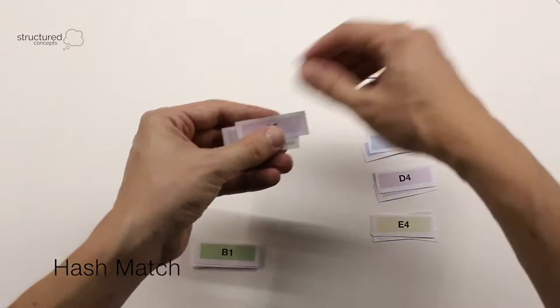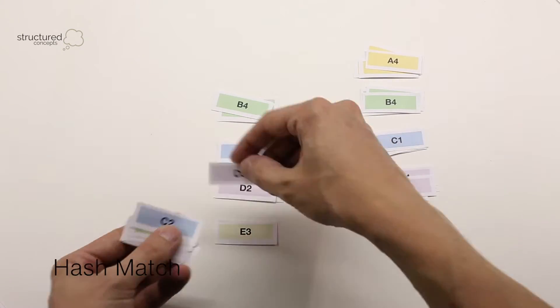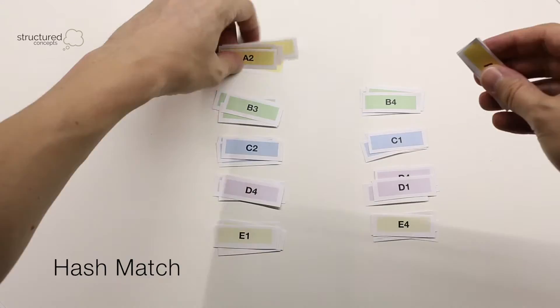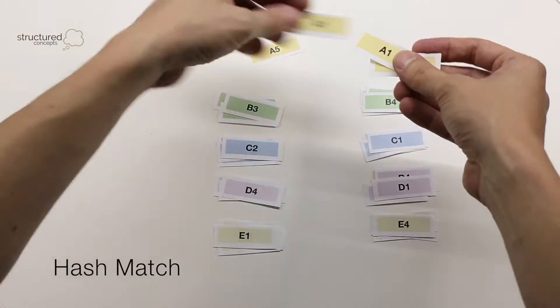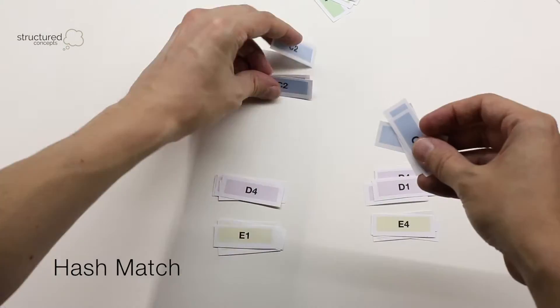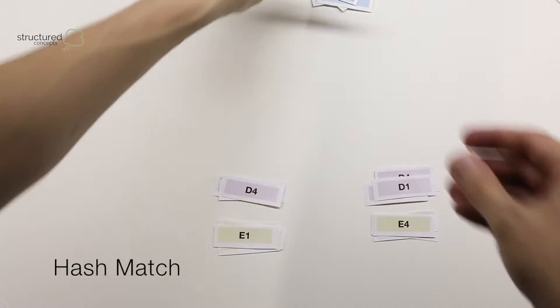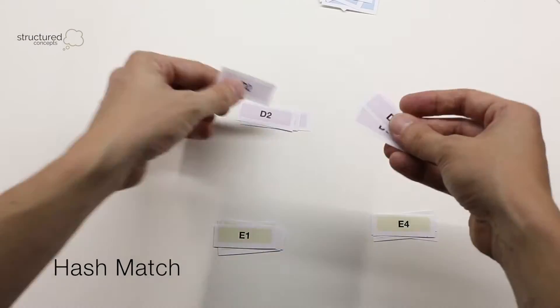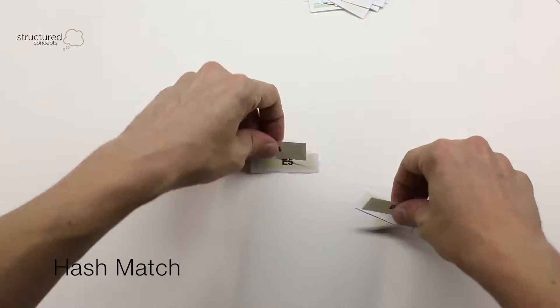First off, the general list. The hash match operator usually gets to do the heavy lifting. It splits the data into hash buckets so it can join the contents of each bucket one at a time. This process uses up memory and/or tempdb space, which might become a problem if your server is running low on memory.